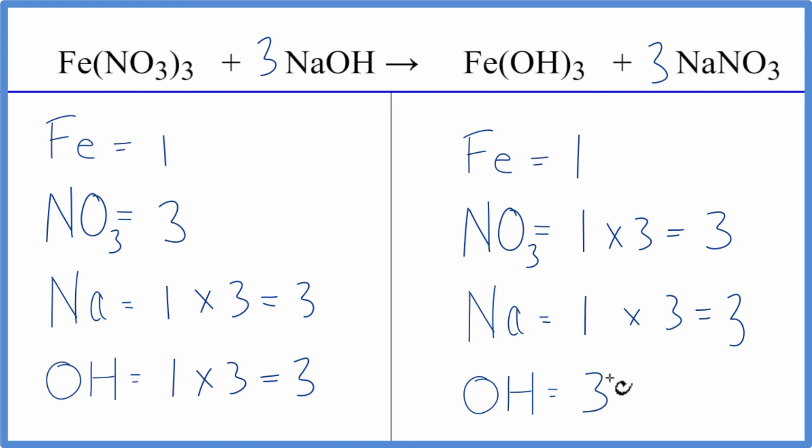We're done. This equation is balanced. So you see how it helps when we count this NO3 as one item because it's on both sides, or the hydroxide because it's on both sides, makes the balancing a lot easier.